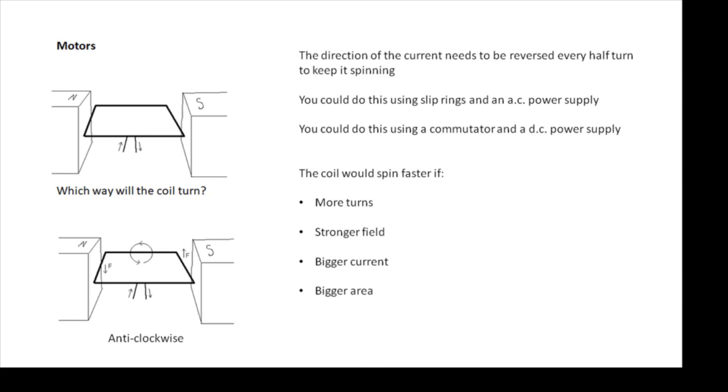And there's a couple of ways of doing that. If you're using a DC supply, then you use a commutator. If you're using an AC supply, then the current reverses anyway every half cycle. And you use things called slip rings.